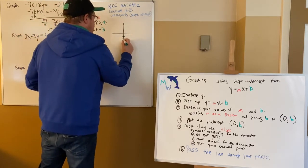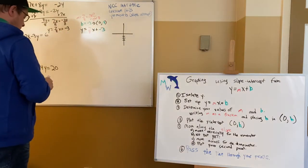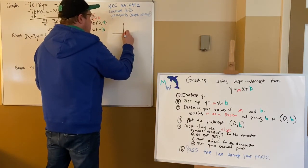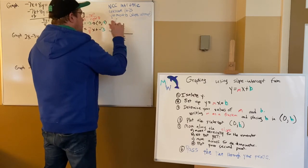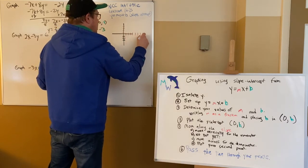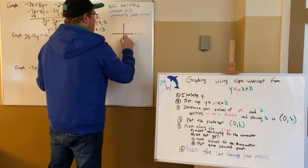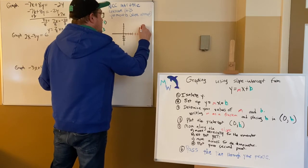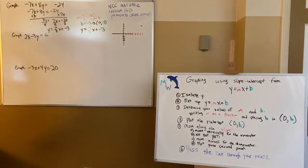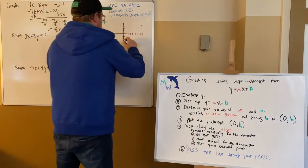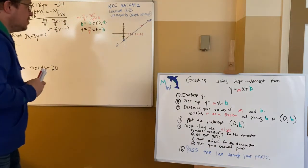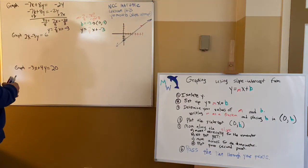Plot zero negative three, then go up seven and right eight. Up seven lands me at positive four for my new y, then right eight lands me at eight-four. That's the second point. The line goes below the origin, uphill from left to right, missing quadrant three.